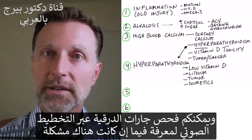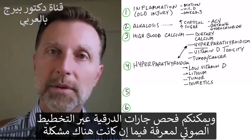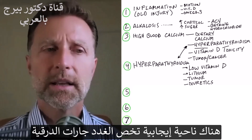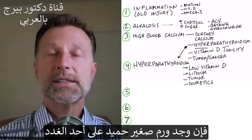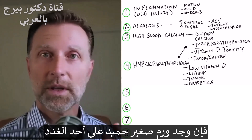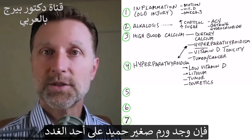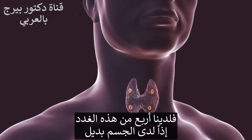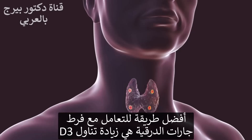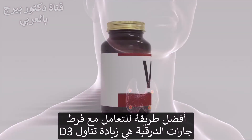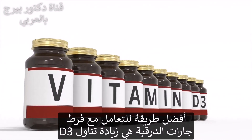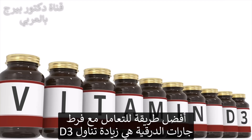You can get it checked — get an ultrasound, see if there's a problem. The good thing about the parathyroid glands is if you have a small benign tumor on one of the glands, you have four, so you have some spares. The best way to deal with this is to start taking more vitamin D3.